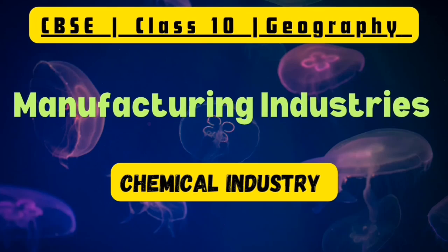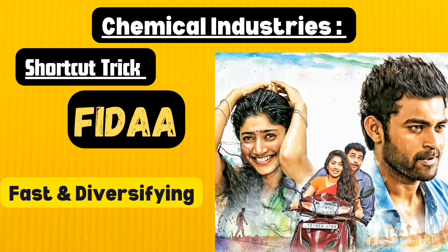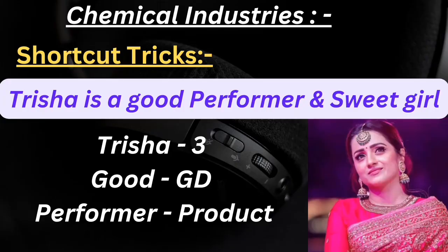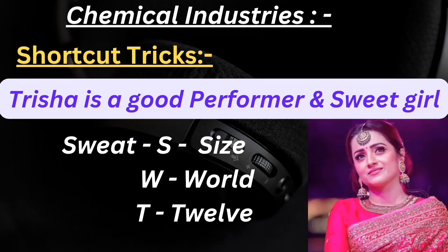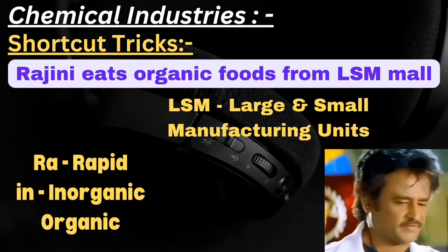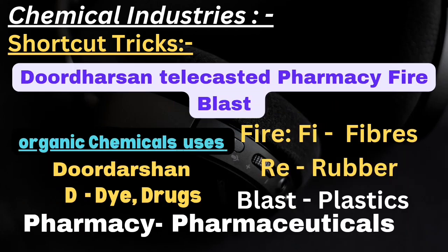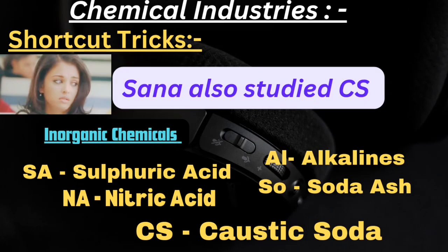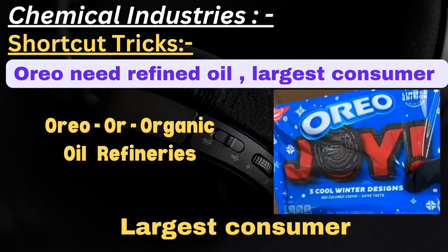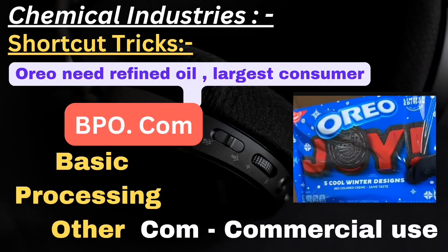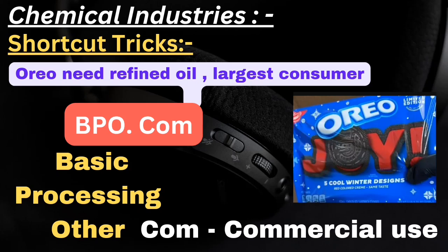Let's recall all the shortcuts: FIDA; Trisha is a good performer and sweet girl; Rajini eats organic foods from LSM mall; Sana also studied CS; Doordashen telecaster pharmacy fire blast; Oreo needs refined oil, pistas and cashews; it has largest consumers; BPO.com. That's all - I have covered all the important points under this topic.